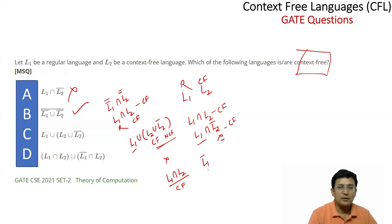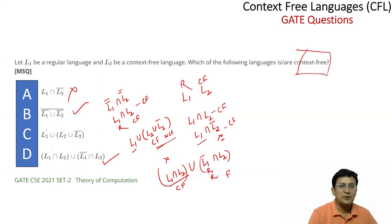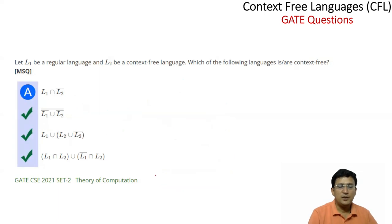The second part is L1-complement — the complement of a regular language is regular. So it is regular, and intersecting with L2 which is context-free gives a context-free result. Then we have a union, so this is also context-free. So options 2 and 3 are correct. L1 is regular; regular union context-free union complement of context-free should be context-free. Thanks for watching — we will discuss more concepts related to GATE questions in subsequent lectures.